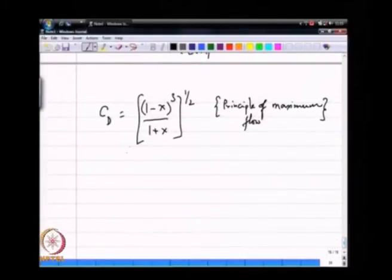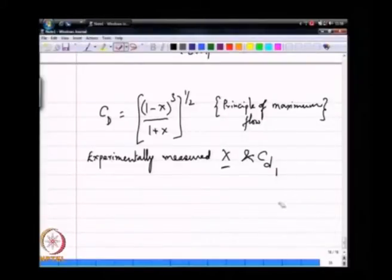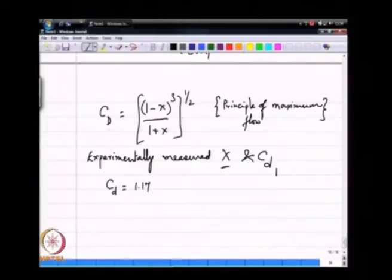In reality if you take experimental data, measured x and CD, if I take a range of spray nozzles, then I am able to measure CD on those spray nozzles by simply measuring delta P and Q and measuring x by getting the air core diameter.